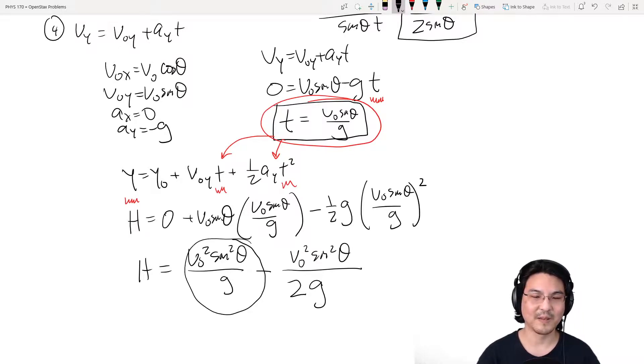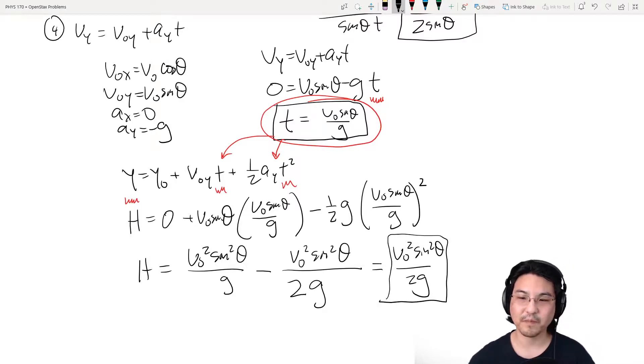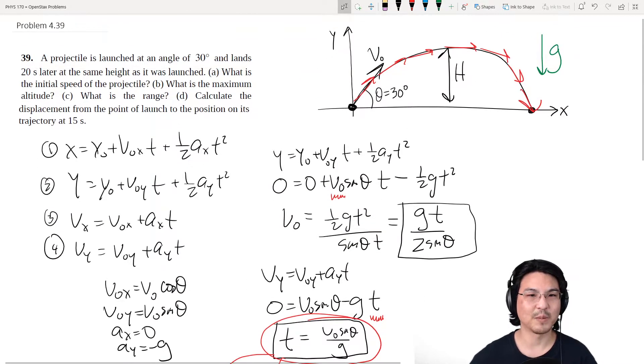Okay. And look at this. V-naught squared sine squared over g. V-naught squared sine squared over g. So I can factor out one over one half. So. There you go. So this is the maximum height. That's part b.